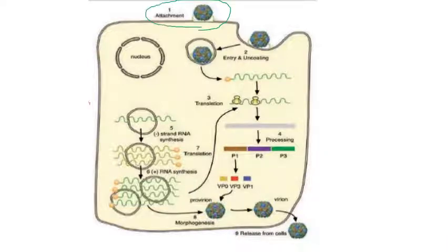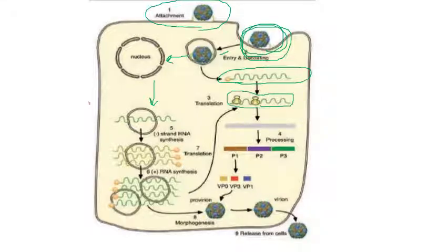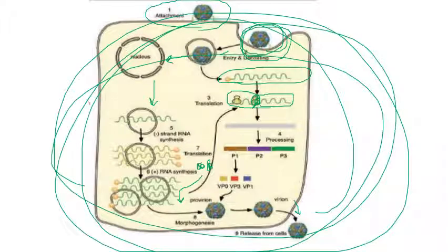In summary, the virus replication process begins with attachment and uncoating of the viral genome. After uncoating, the nucleic acid alone is released. The nucleic acid is then transcribed and translated by ribosomes, which produce the essential components required by the virus — nucleic acid and protein coats — separately. These components are then assembled to produce a huge amount of complete matured virus particles, called virions. After virion production, they are transported to different plant parts and the infection process continues.